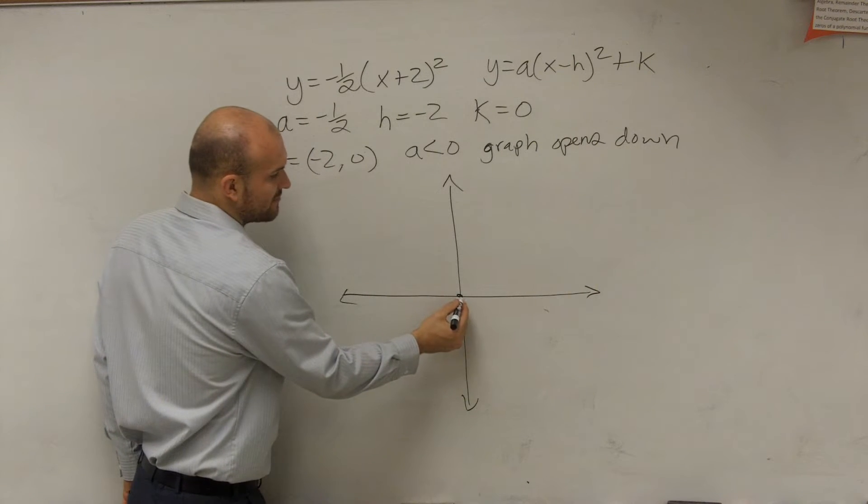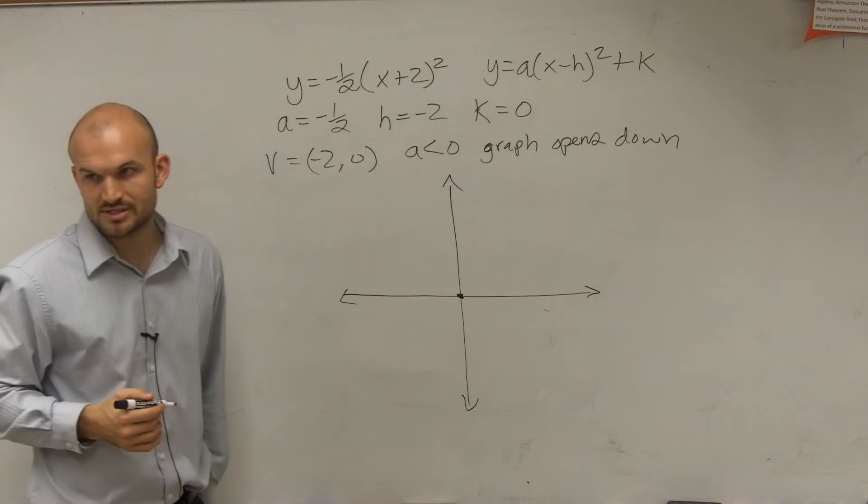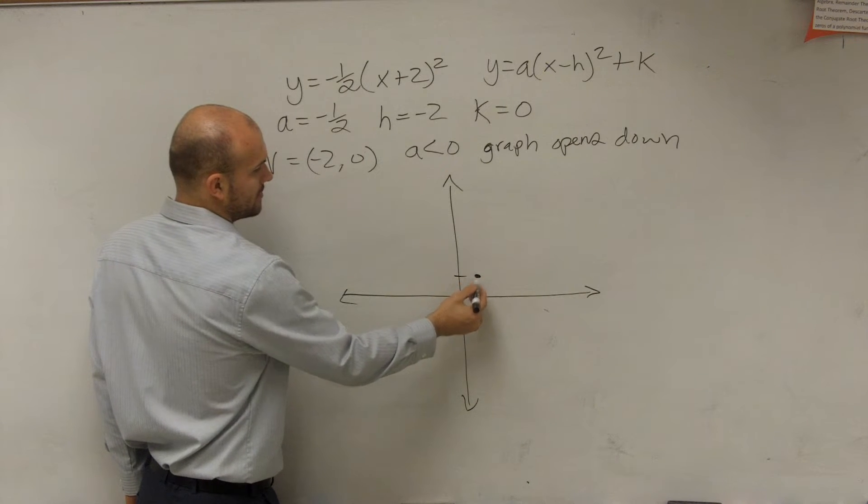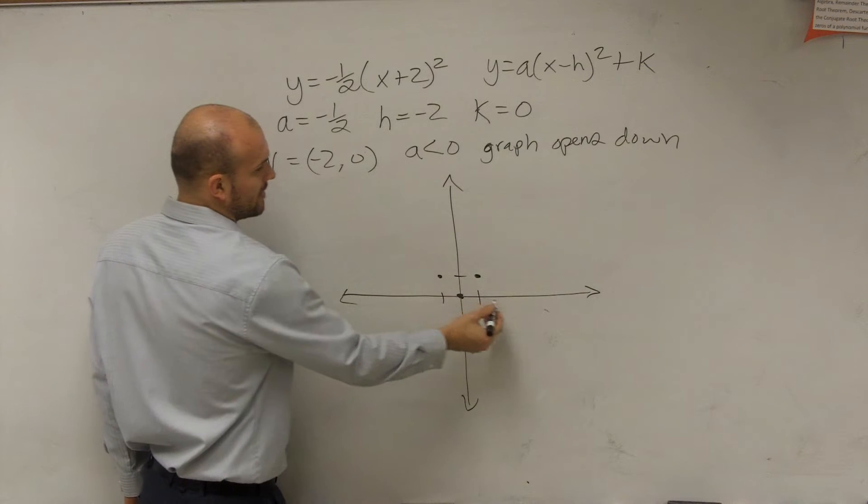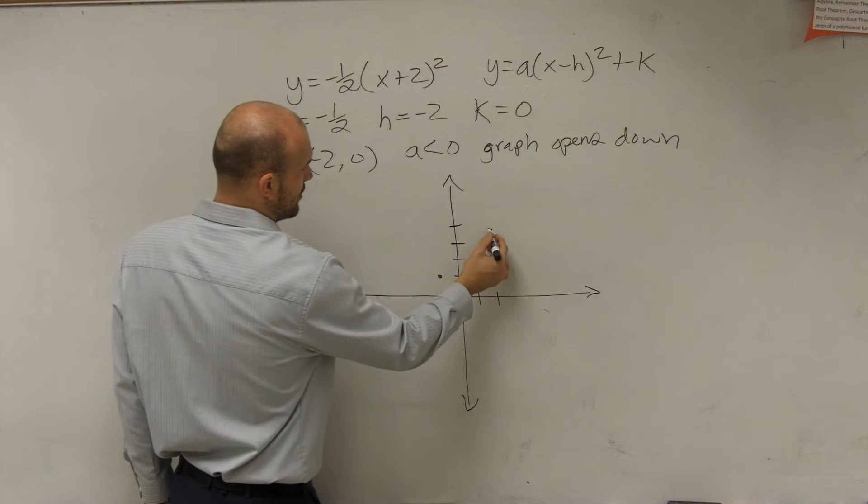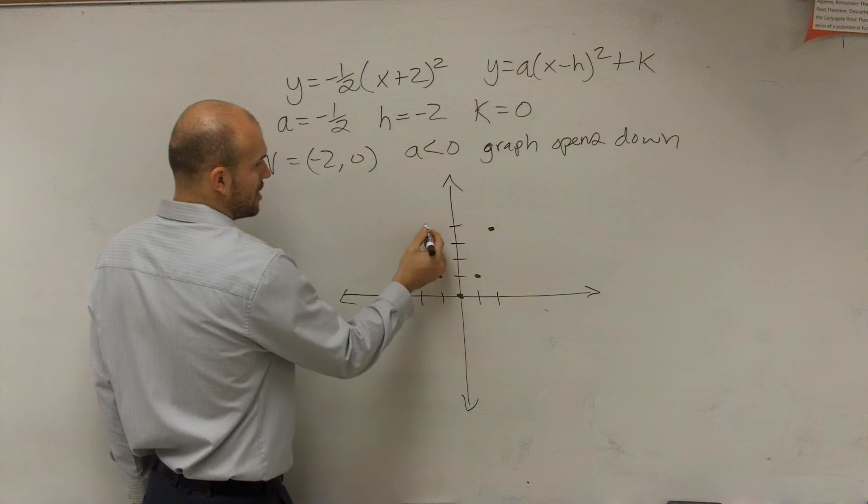All right. The parent graph has a vertex at 0 comma 0. It has a point at 1 comma 1 and at negative 1 comma 1. It has another point at 2 comma 4, and at negative 2, up 4.